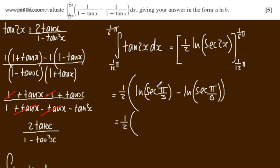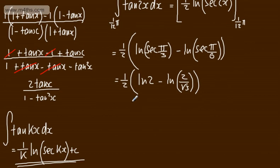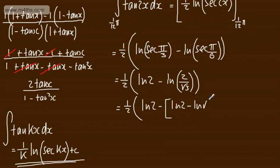Evaluating: cos(pi by 3) is one-half, so sec(pi by 3) equals 2, giving natural log of 2. For sec(pi by 6): cos(pi by 6) is root 3 over 2, so sec(pi by 6) is 2 over root 3. Splitting the logarithm of 2 over root 3 as ln 2 minus ln(root 3), the ln 2 terms cancel, leaving minus minus one-half of ln(root 3), which simplifies to one-half ln(root 3).